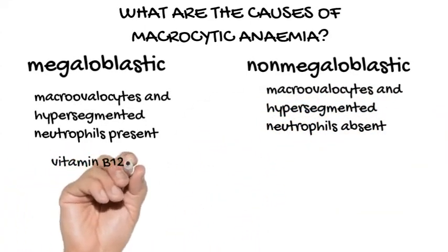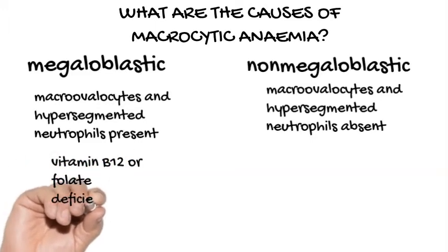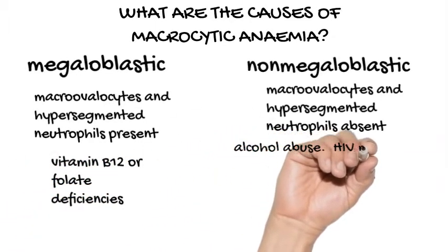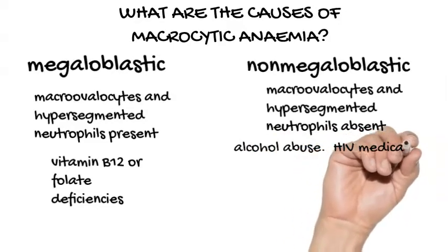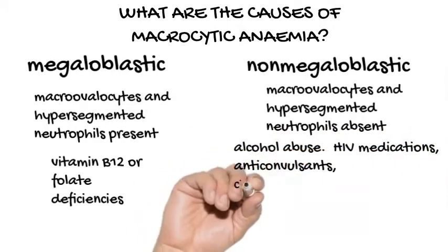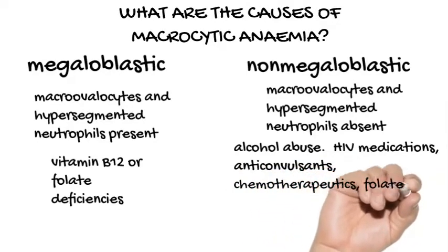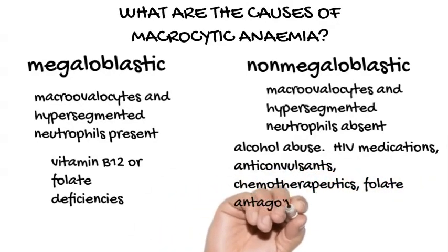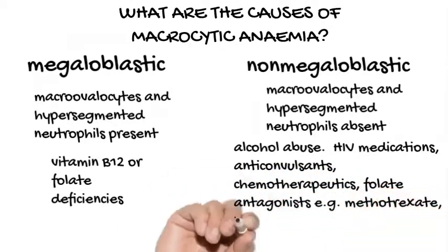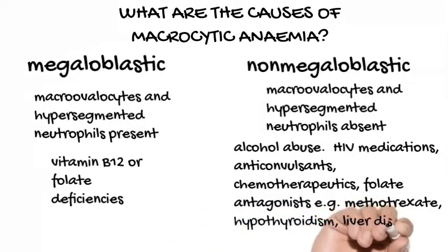Megaloblastic anemia is caused by vitamin B12 or folate deficiencies. Non-megaloblastic anemia is caused by alcohol abuse, medications — for example HIV medications, anticonvulsants, chemotherapeutics, and folate antagonists such as methotrexate.